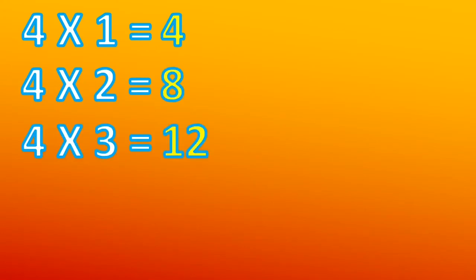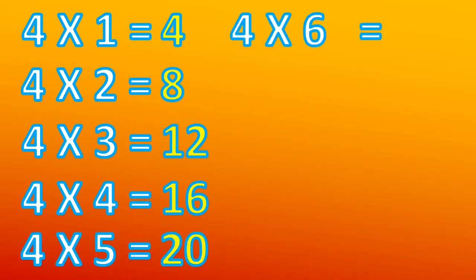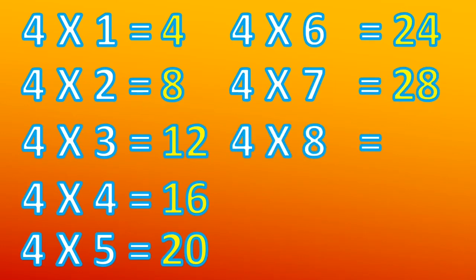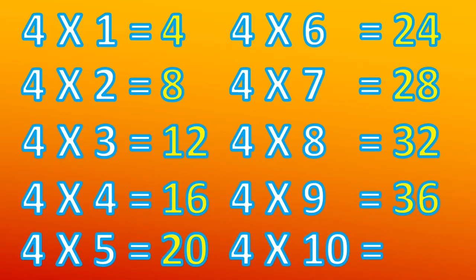Four ones are four, four twos are eight, four threes are twelve, four fours are sixteen, four fives are twenty, four sixes are twenty-four, four sevens are twenty-eight, four eights are thirty-two, four nines are thirty-six, four tens are forty.